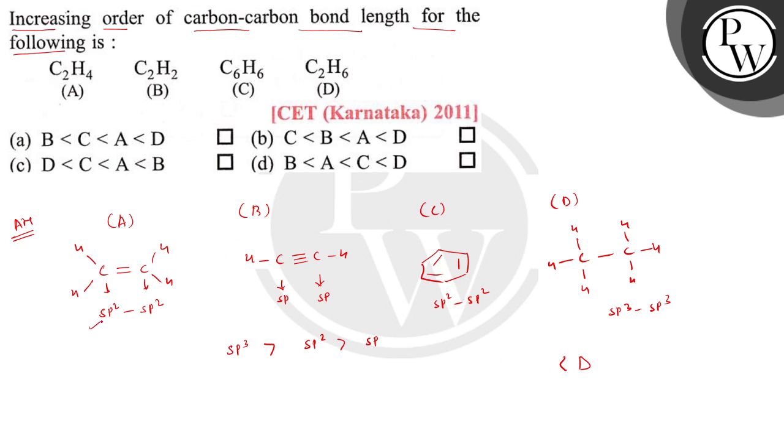Now if you compare A and C, both have sp2 hybridization. But in C, the bond length is neither single bond or double bond. It is in between single bond or double bond due to resonance.